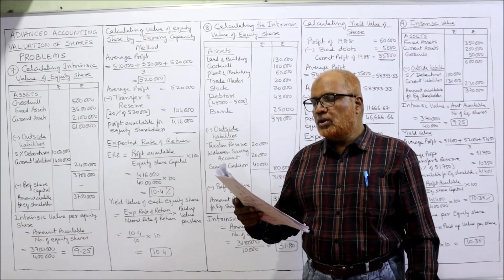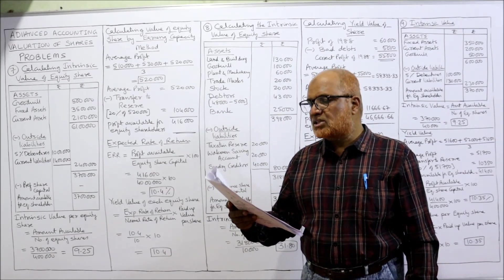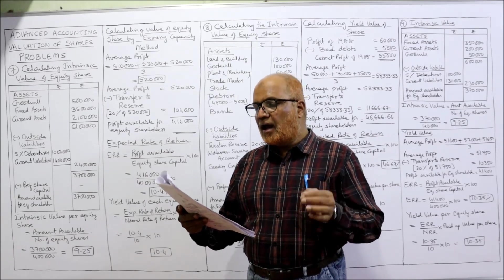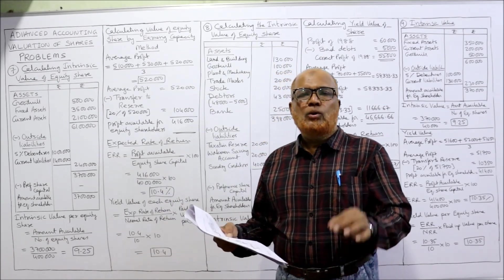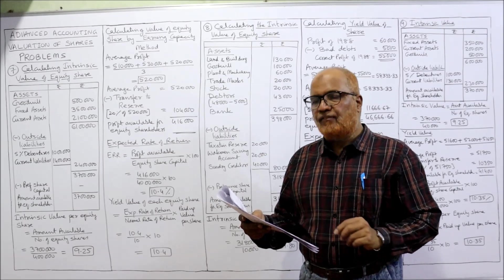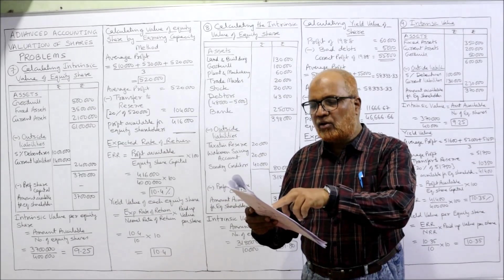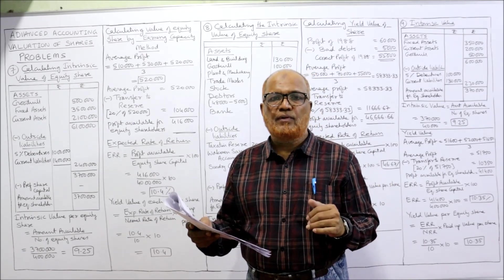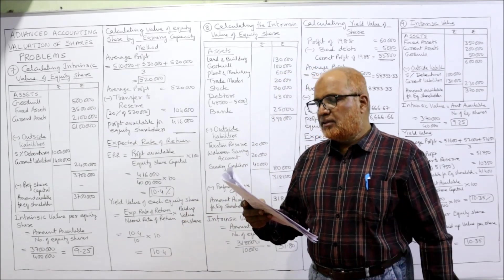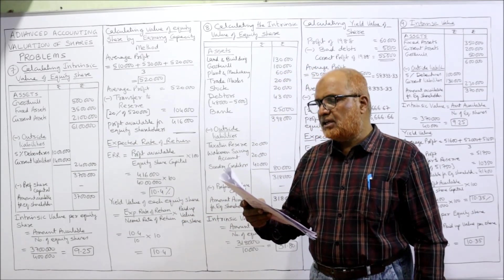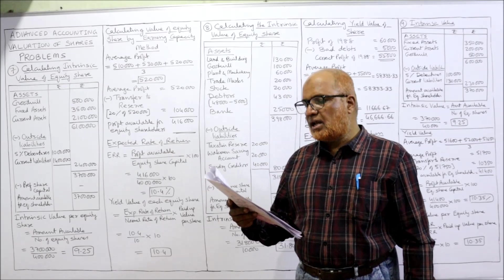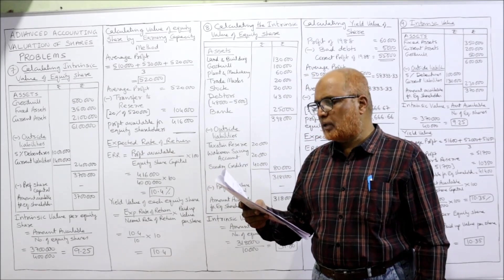Adjustment: on 31st December 1992, the fixed assets were independently valued at 35 lakh and goodwill at 5 lakh. The present value of fixed assets and goodwill is given, so we should not take the balance sheet value; we should take the current value. The net profit for the 3 years were: 1990 — 5 lakh 10,000; 1991 — 5 lakh 30,000; and 1992 — 5 lakh 20,000.